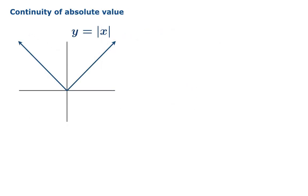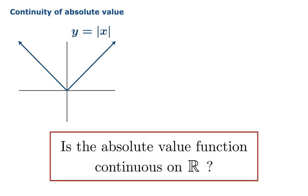Let's look at the absolute value function and ask the question: is this continuous at every argument on the real number line? Let's try to answer the question using our mathematical definitions — in other words, we're going to try to show that for any argument a, the limiting value of the absolute value of x as x approaches a is actually equal to the absolute value of a. We'll try not to appeal to any heuristic ways of thinking about things. For example, you might look at the origin and say, is this spot broken? But that's not the way you want to try to answer such questions — you need to appeal to the mathematical definitions.